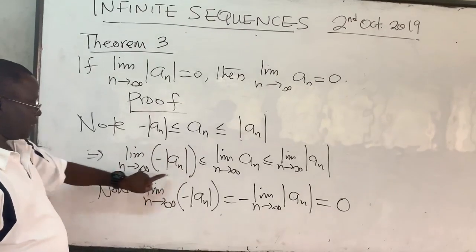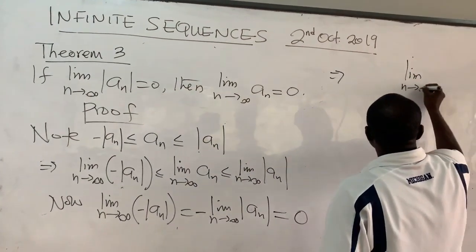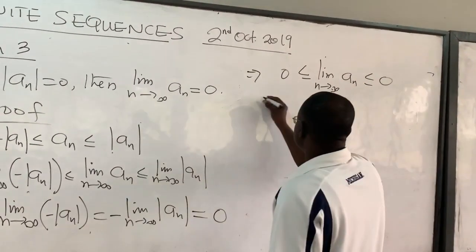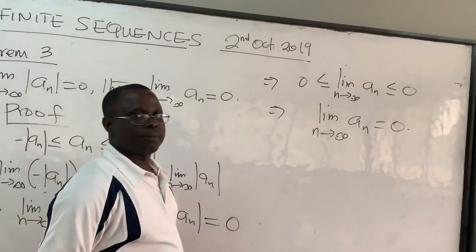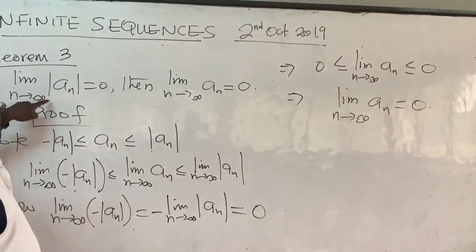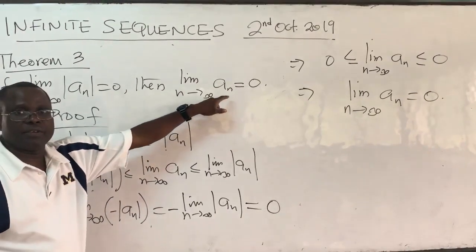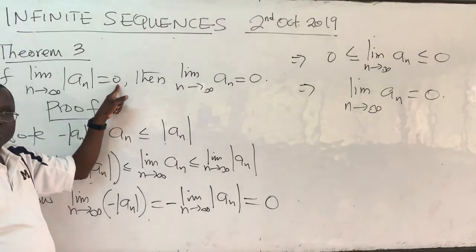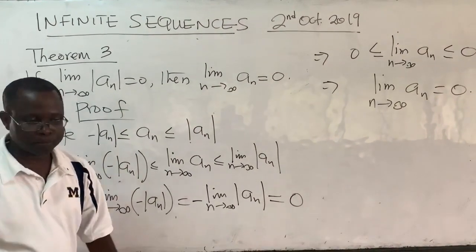So the left-hand side of the inequality is zero, and from the theorem, the right-hand side also equals zero. This implies that the limit of aₙ is squeezed between zero and zero. Using the squeeze theorem (Theorem 2), we can conclude that the limit as n goes to infinity of aₙ is equal to zero. So if you take the limit of the absolute value of a sequence and it goes to zero, you can conclude the limit of the sequence itself goes to zero. Be careful: if the absolute value of the limit gives a number higher than zero, you cannot apply this.